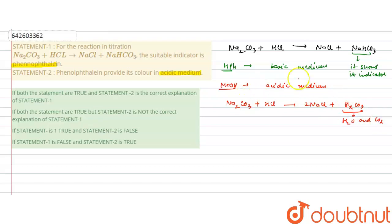If we have to stop the reaction at the sodium bicarbonate stage, phenolphthalein is the suitable indicator. And if the sodium carbonate has to be fully neutralized to carbonic acid plus NaCl in acidic medium, methyl orange is used. So for this reaction, when it has to stop at NaHCO3, the suitable indicator is phenolphthalein. It is correct.